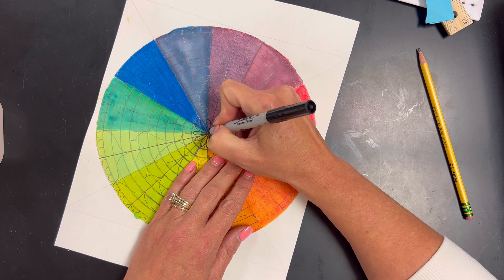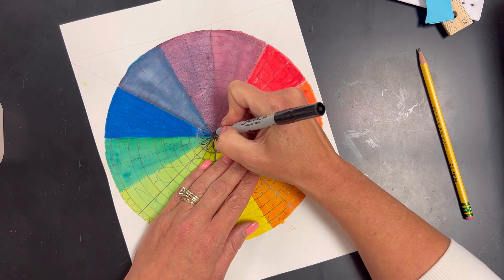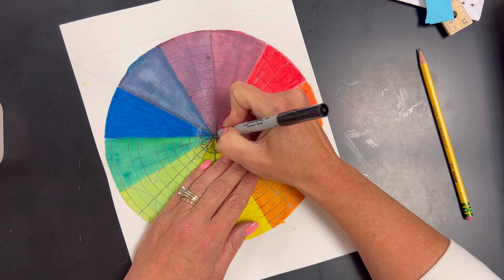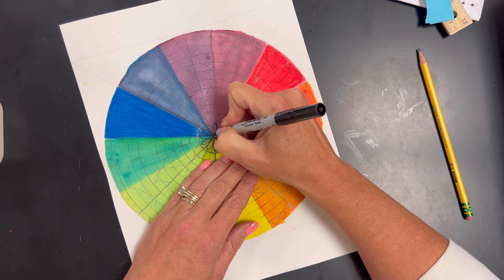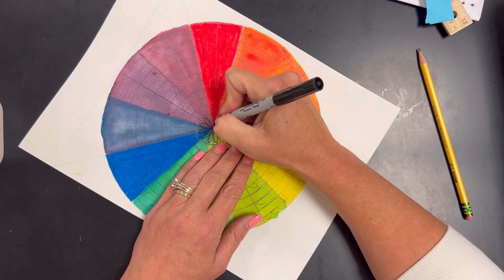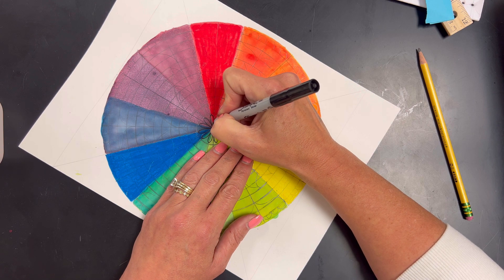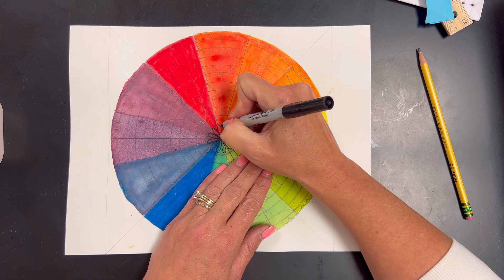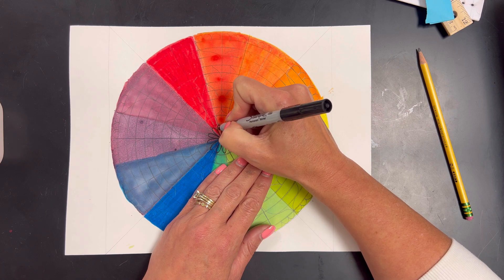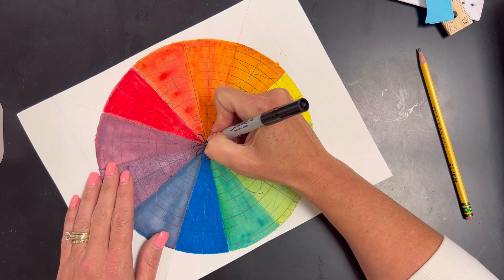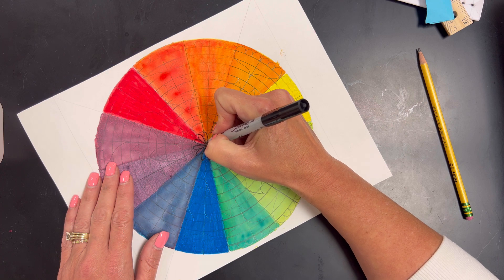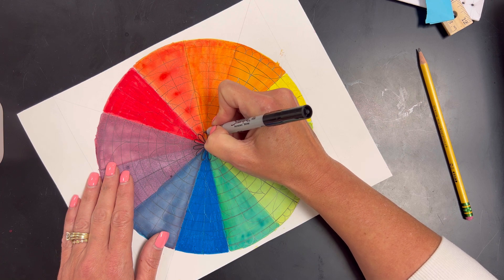So when we're inking at this point, this is where you can make some corrections. Like if I've got one petal that's a little bit off in the sketch from the pencil, I can make the correction with the ink and just make them a little bit more accurate.